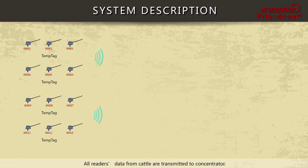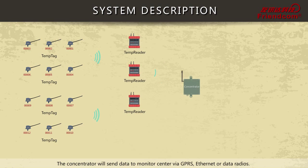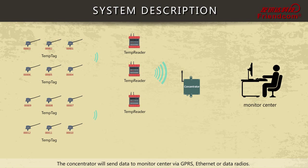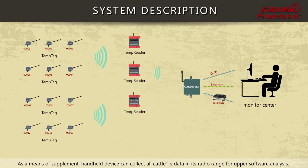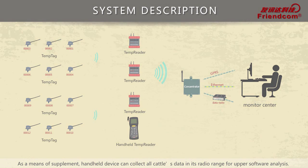All reader data from cattle are transmitted to the concentrator. The concentrator will send data to the monitor center via GPRS, Ethernet, or data radios. As a supplemental means, a handheld device can collect all cattle data within its radio range for upper software analysis.